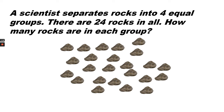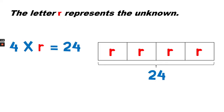A scientist separates rocks into 4 equal groups. There are 24 rocks in all. How many rocks are in each group? Let's use a tape diagram to solve for the unknown. The letter R represents the unknown — we want to know how many rocks are in each group, and there are 4 groups. Notice that the tape diagram has 4 boxes with an unknown number of rocks in each box, but we know that the total or product is equal to 24.